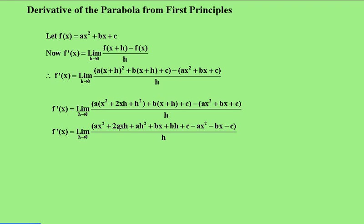It becomes ax squared plus 2axh plus ah squared. This becomes bx plus bh plus c. And of course, all the plus signs change to negative signs in this section here.